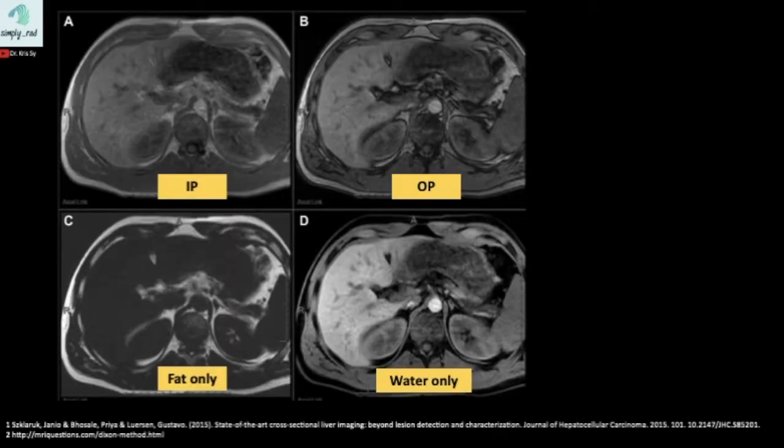We are then given a set of four images just like these, in-phase and out-phase on top, fat only and water only at the bottom. This water only images achieves homogenous fat suppressed images here, which is useful to eliminate the signal from macroscopic fat. Notice here that the subcutaneous fat and peritoneal fat are dark.